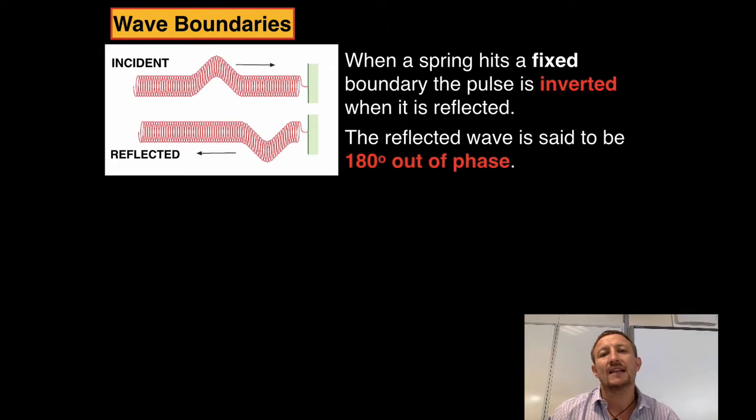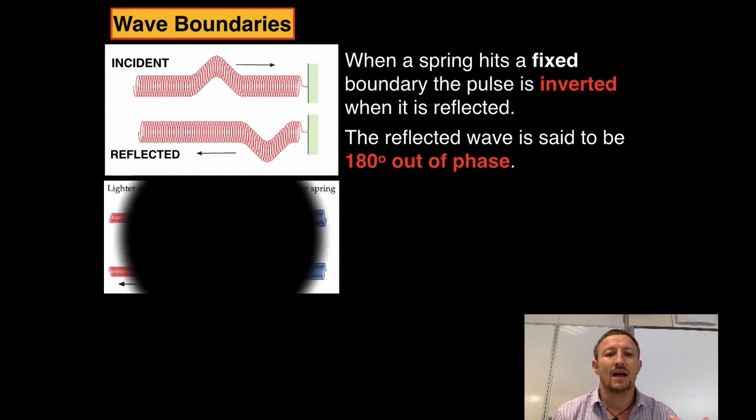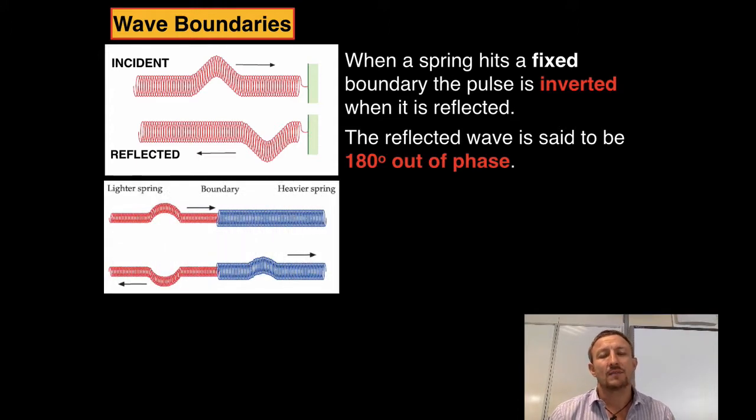Now the question then is well what happens if it hits an object which is not immovable, it actually has some fluidity with it. So in this situation we've got one type of spring going into another type of spring. In this case we've got a light spring going into a heavier spring.